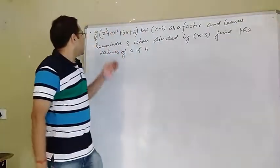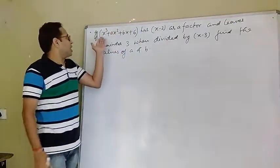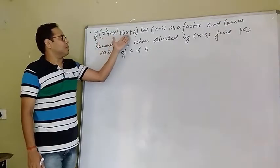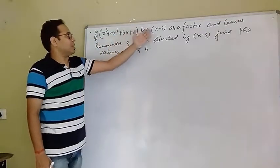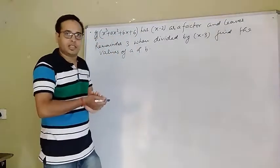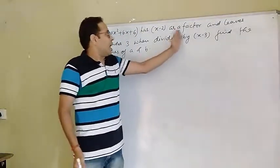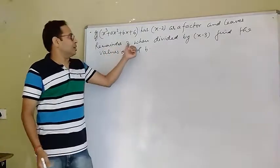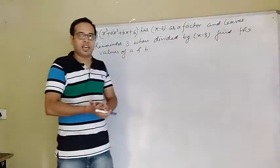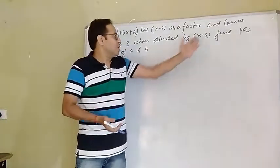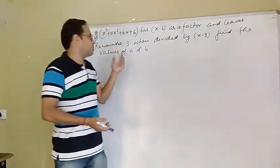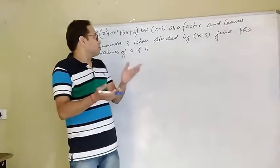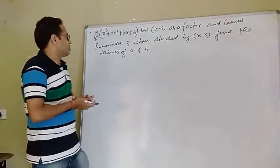So let's see — he has asked that if x³ + ax² + bx + 6 has x - 2 as a factor, and leaves remainder 3 when divided by x - 3, we need to find out the values of a and b. Let's see how to do this.